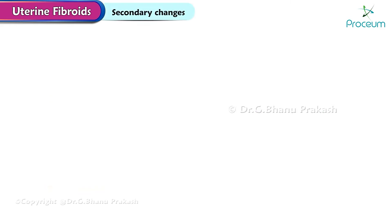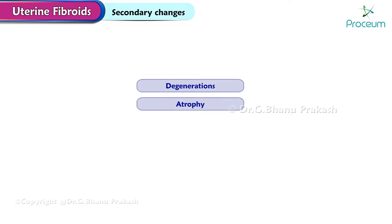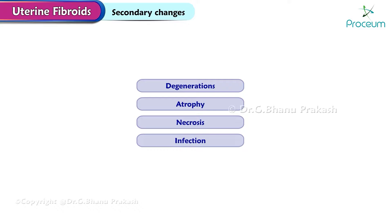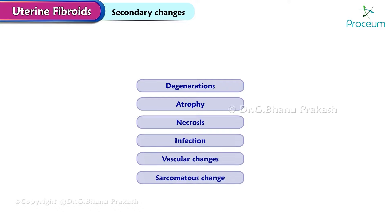Secondary changes in fibroids include degenerations, atrophy, necrosis, infection, vascular changes, and sarcomatous change.